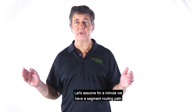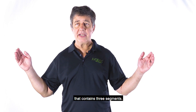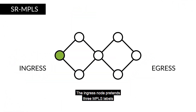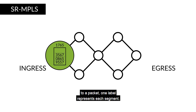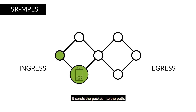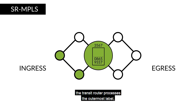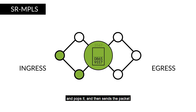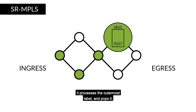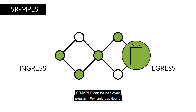Let's assume we have a segment routing path that contains three segments. The ingress node prepends three MPLS labels to a packet — one label represents each segment. It sends the packet into the path. The transit router processes the outermost label and pops it, then sends the packet to the second segment endpoint. It processes the outermost label and pops it, and finally sends the packet to the segment egress node.